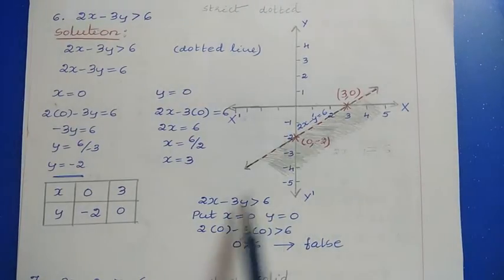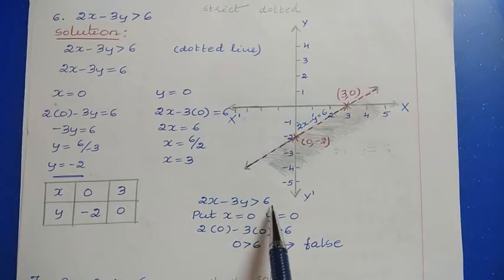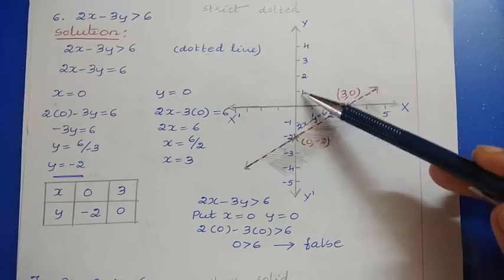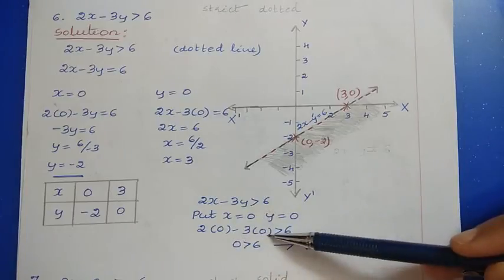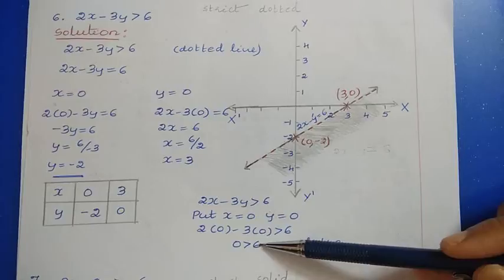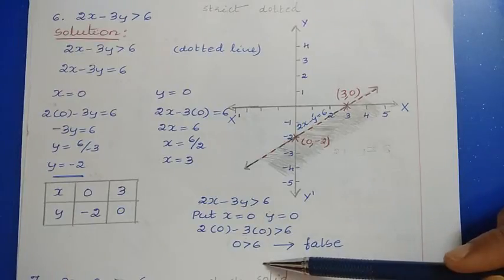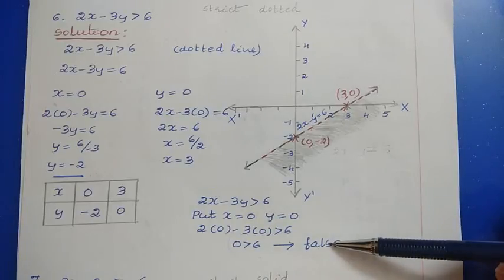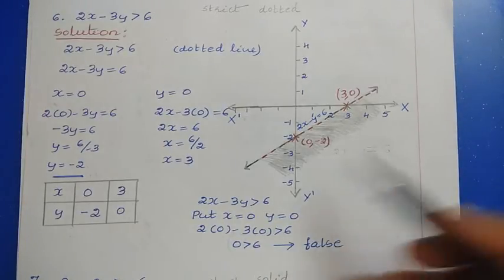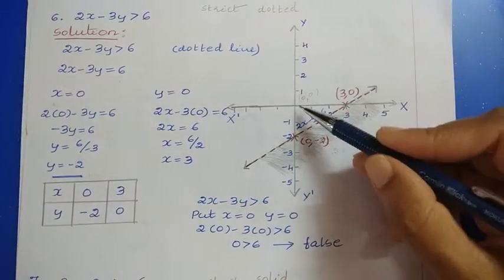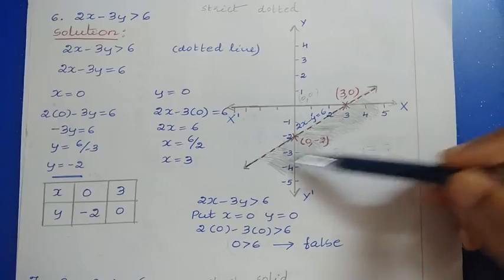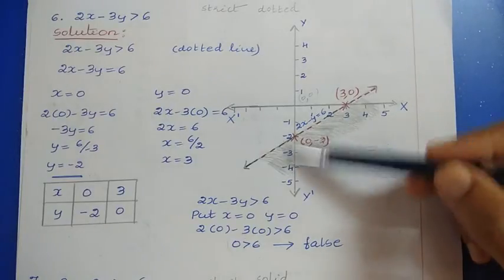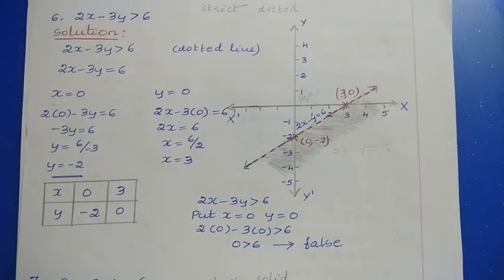To shade the area, take the inequality 2x minus 3y greater than 6 and substitute the origin (0, 0): 2 into 0 minus 3 into 0 is greater than 6, which gives 0 is greater than 6. This is false, so the origin side is not the shaded area. We shade the area away from the origin. This is the graph for 2x minus 3y greater than 6.